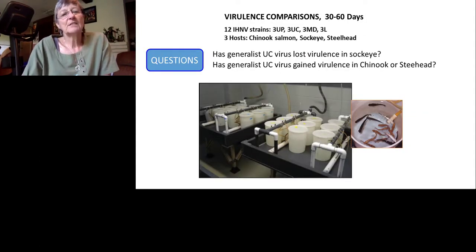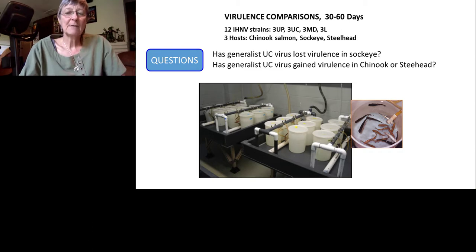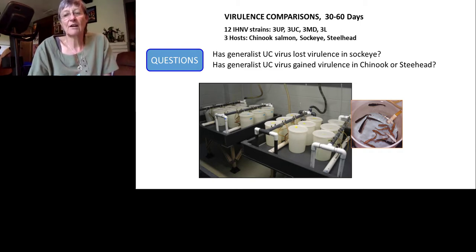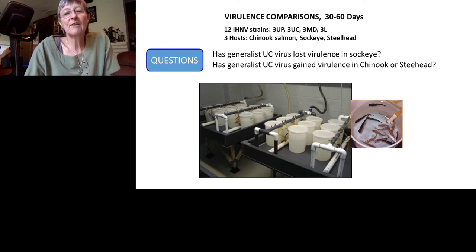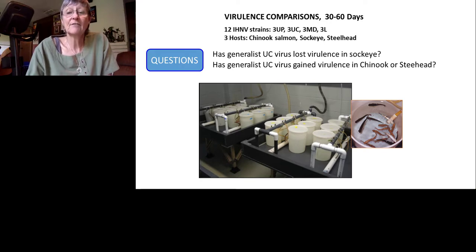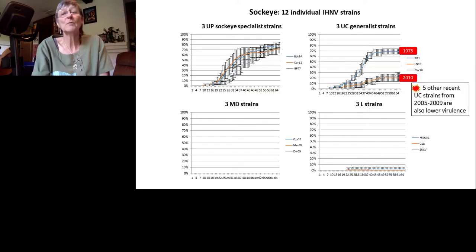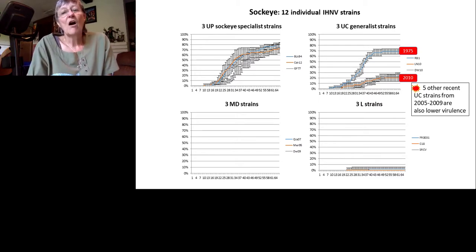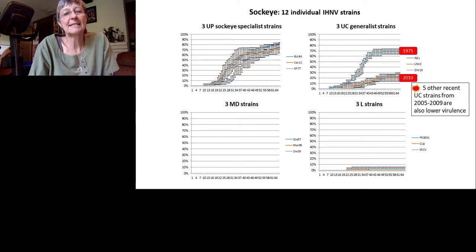For virulence comparisons, we expose triplicate groups of 20 fish to each of the 12 virus strains and monitor mortality over 30–60 days. In steelhead, the UP sockeye specialists each caused 70–80% mortality by 60 days. The generalist UC strains were more variable — one early 1975 isolate had high virulence, while two more recent 2010 isolates were significantly lower. Testing five additional current UC strains confirmed they are all lower virulence, indicating UC has lost virulence in its ancestral sockeye host over time — as predicted by theory.